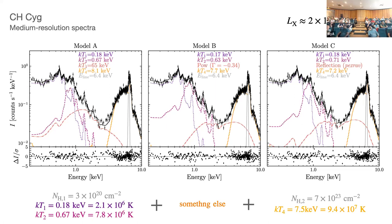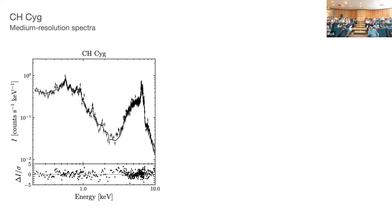What this is telling us is: I need two temperatures — the soft one, detected by the helium-like triplets from nitrogen and oxygen, not so heavily absorbed; something helping reproduce intermediate emission lines; and then the hard, heavily extinguished component. Plus a Gaussian line that none of these components naturally produce.